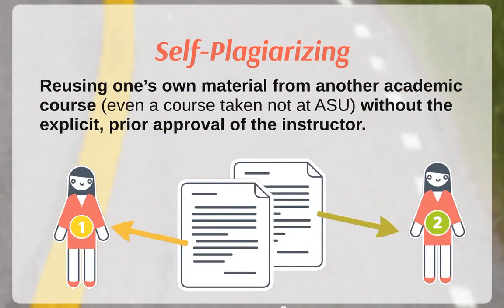Self-plagiarism is another form of academic integrity violation that often has never been discussed. Self-plagiarizing is reusing one's own material from another academic course without the explicit prior approval of the instructor. As the graphic shows, if you submitted a paper to one professor and then realized a second professor wanted a paper on the same topic, simply copying the paper, changing the heading, and resubmitting it to the second instructor would be considered self-plagiarism and academic dishonesty.